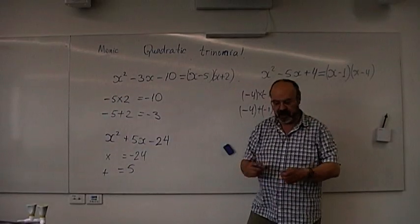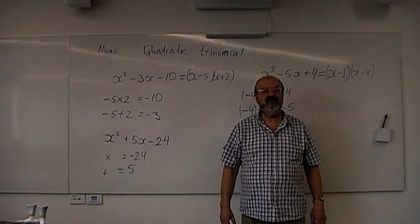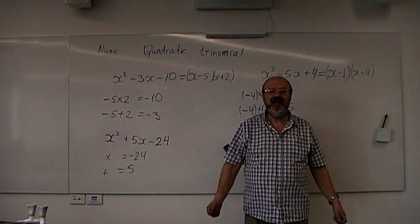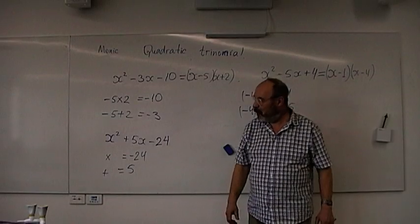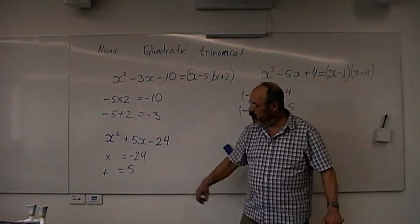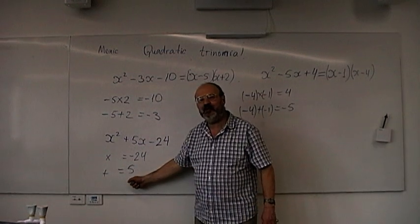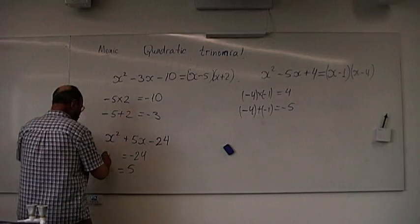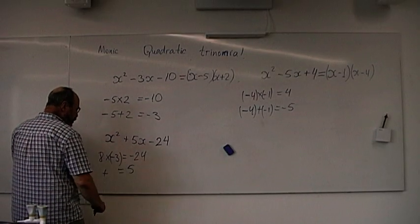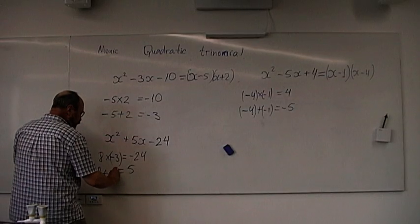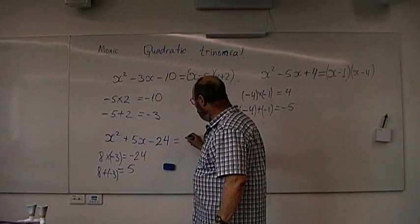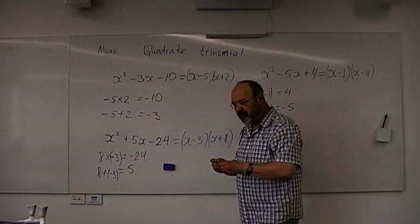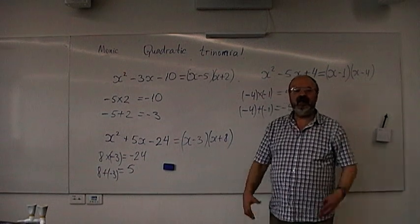Next problem: find two numbers that multiply to negative 24 and add to positive 5. 5 and 6 don't multiply to 24. Negative 8 and 3 multiply to negative 24, but negative 8 plus 3 gives negative 5, not positive 5. So we try 8 and negative 3 — 8 times negative 3 equals negative 24, and 8 plus negative 3 equals positive 5. So x squared plus 5x minus 24 factorizes to x minus 3 times x plus 8. That's all about this technique.